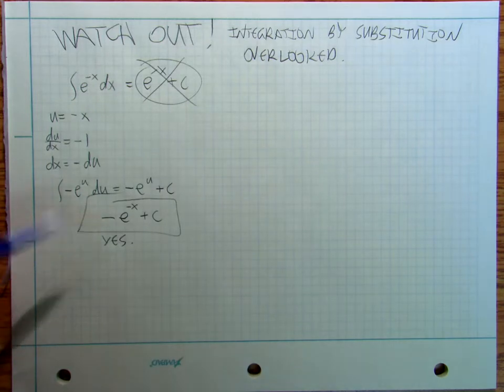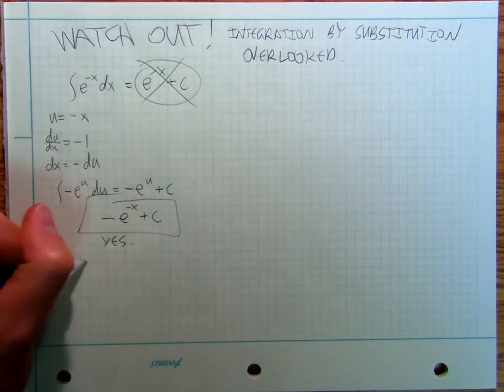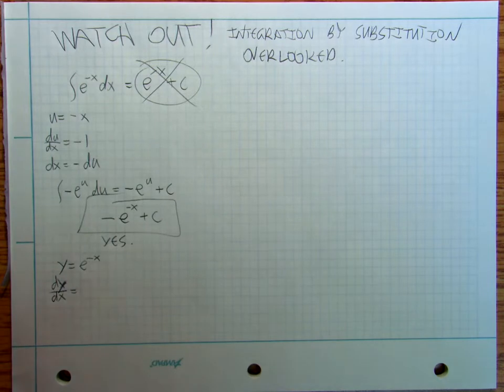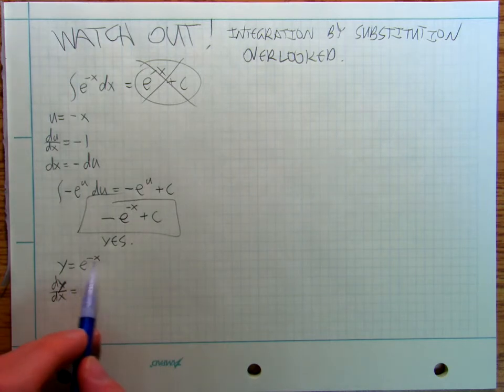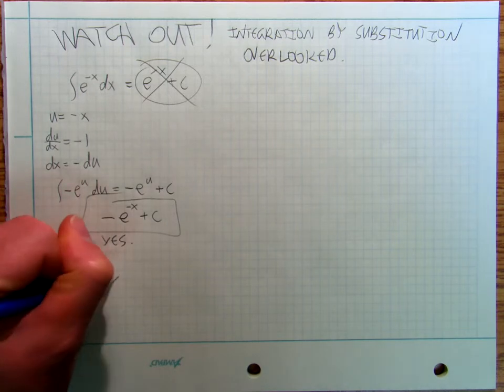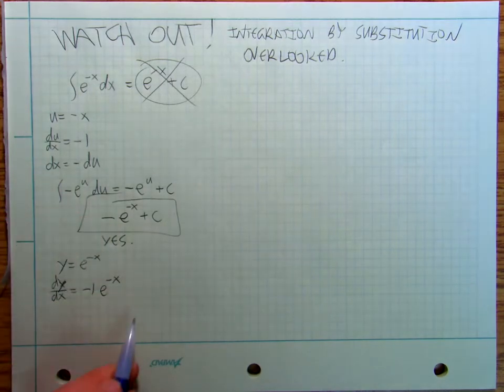Basically what it comes down to is if I say that y equals e to the negative x, dy dx is going to be equal to, this is a chain rule problem, so this is again a watch out for chain rule as well. You've got to remember that the derivative of this is negative 1, so it brings a negative 1 out front.